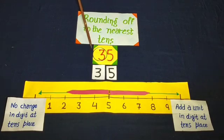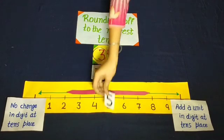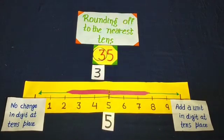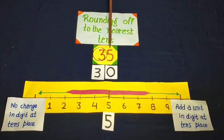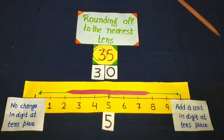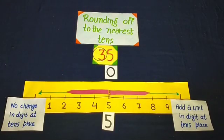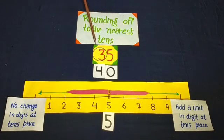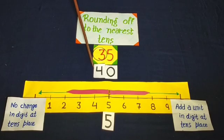Here the number is 35. There is a 5 at the ones place. So we put 0 for the ones place and now the tens digit becomes 4. Dear students, when we do rounding off to the nearest tens, 35 becomes 40.